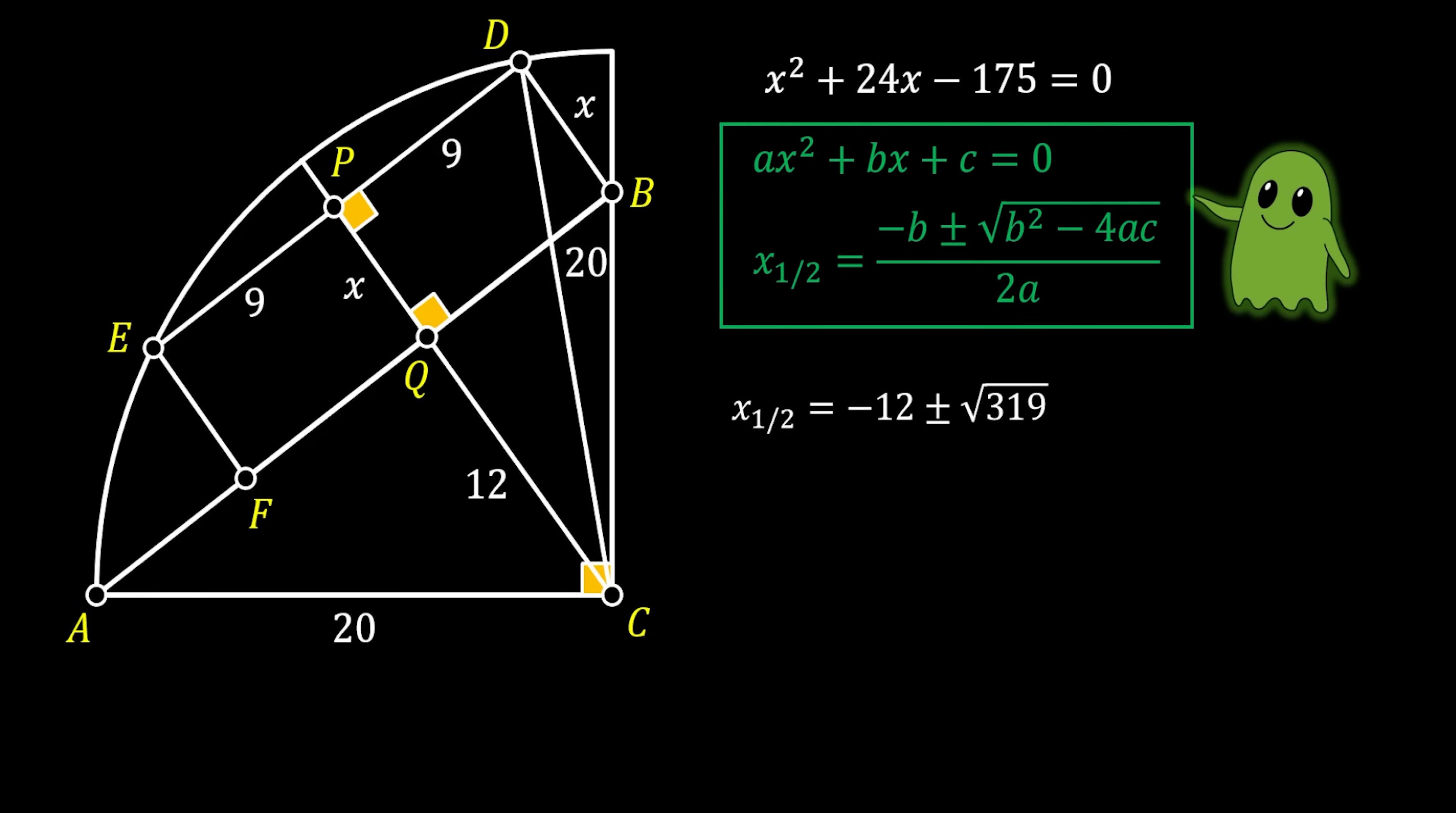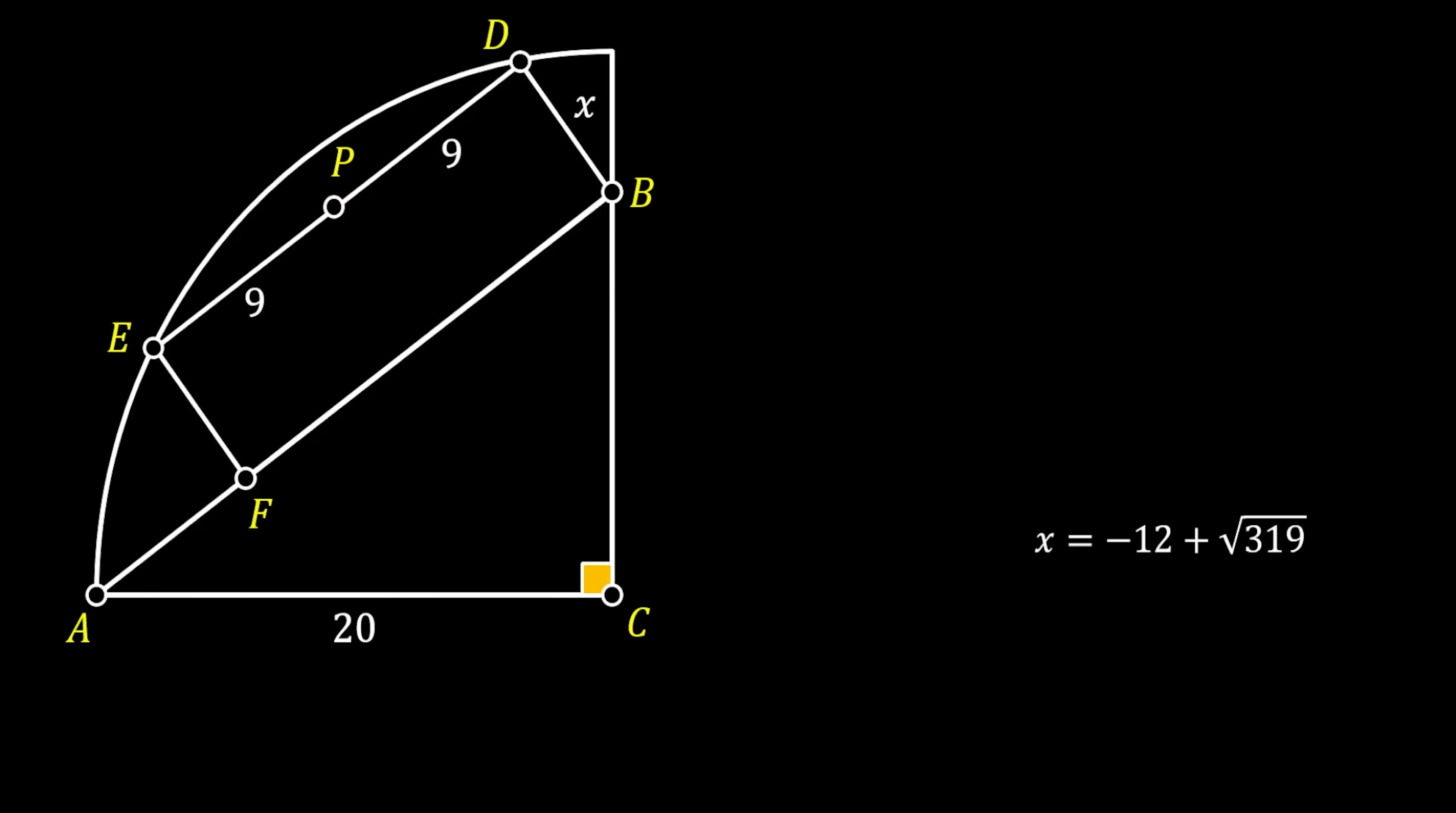Now, from this we have two possible solutions. One is that x is -12 - √319 and the second one is -12 + √319. Of course, we know that the value of x cannot be a negative number, so this means that the only solution for x is -12 + √319, and I will rewrite this as √319 - 12 just for the sake of aesthetics and nothing more.